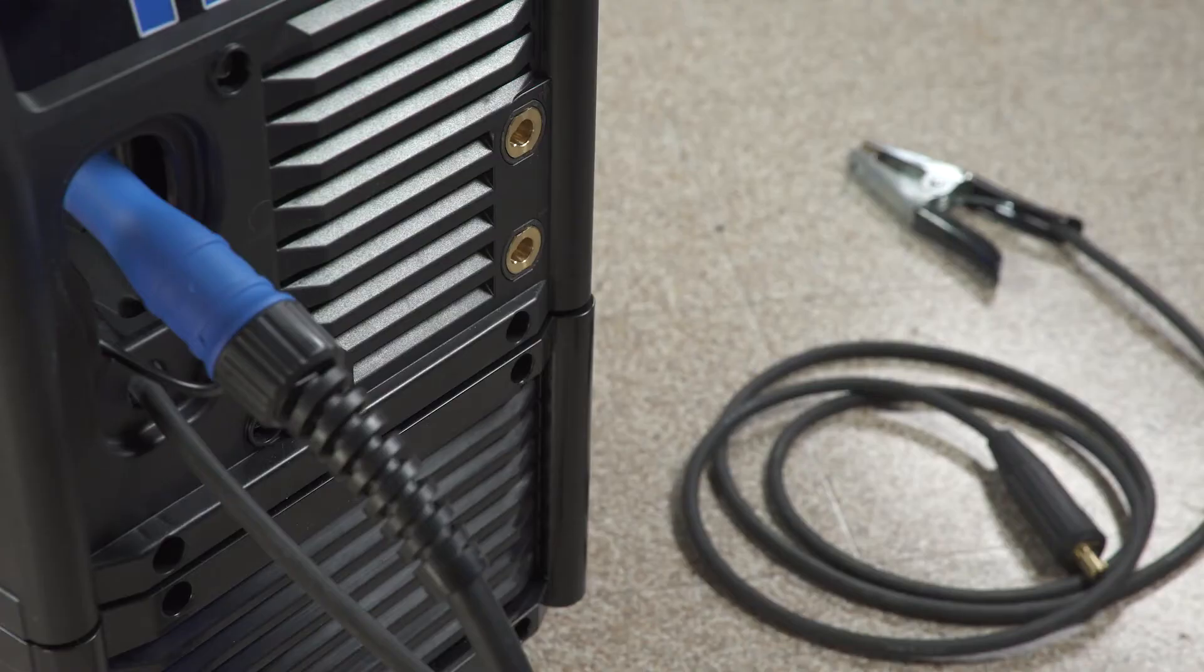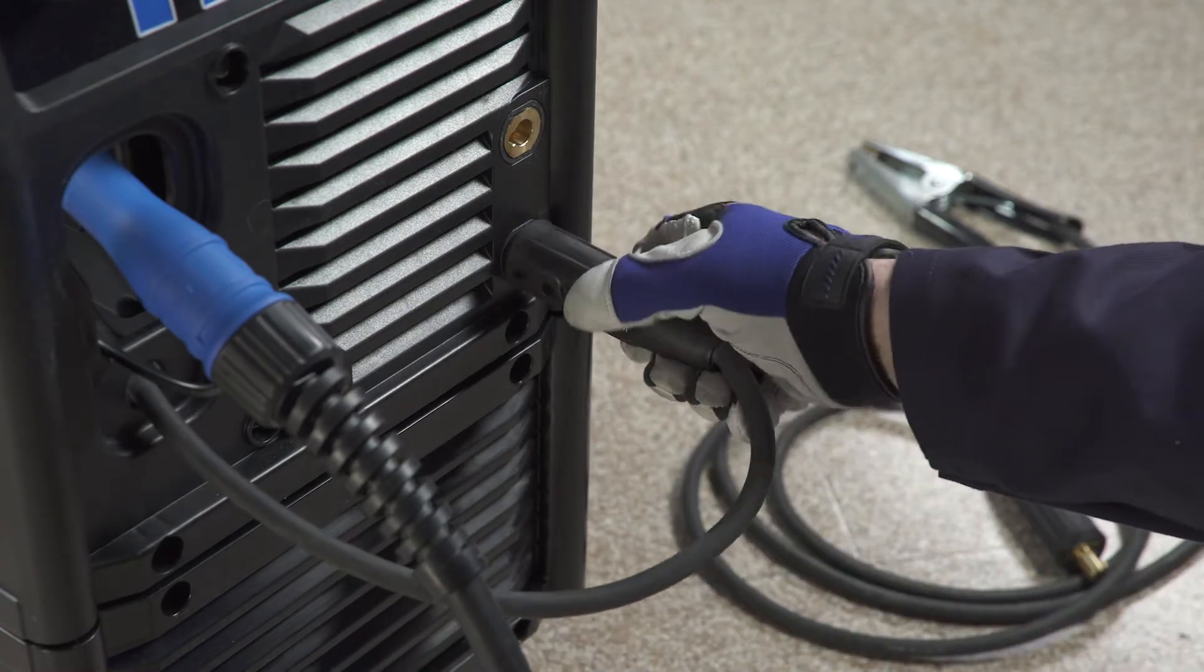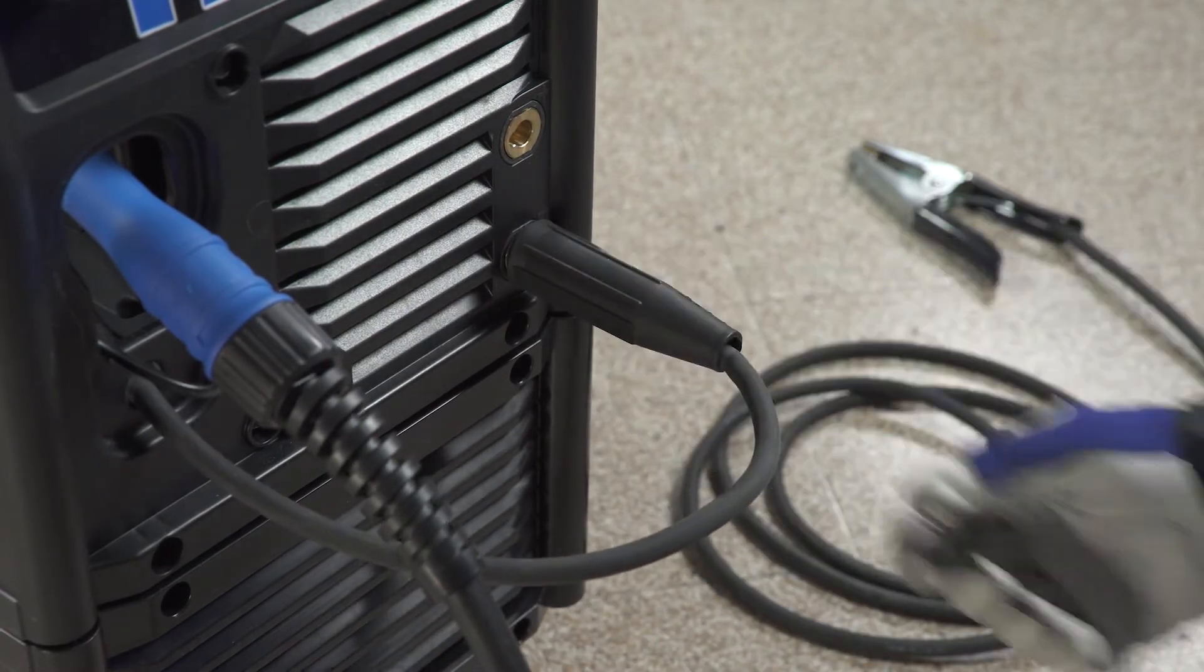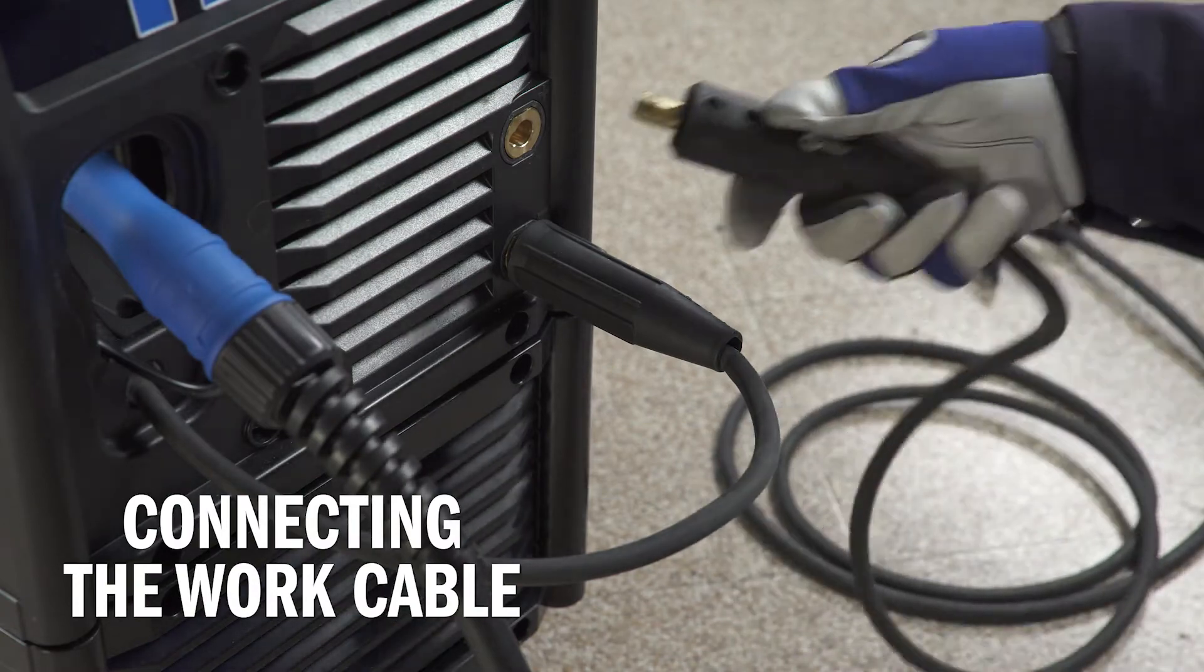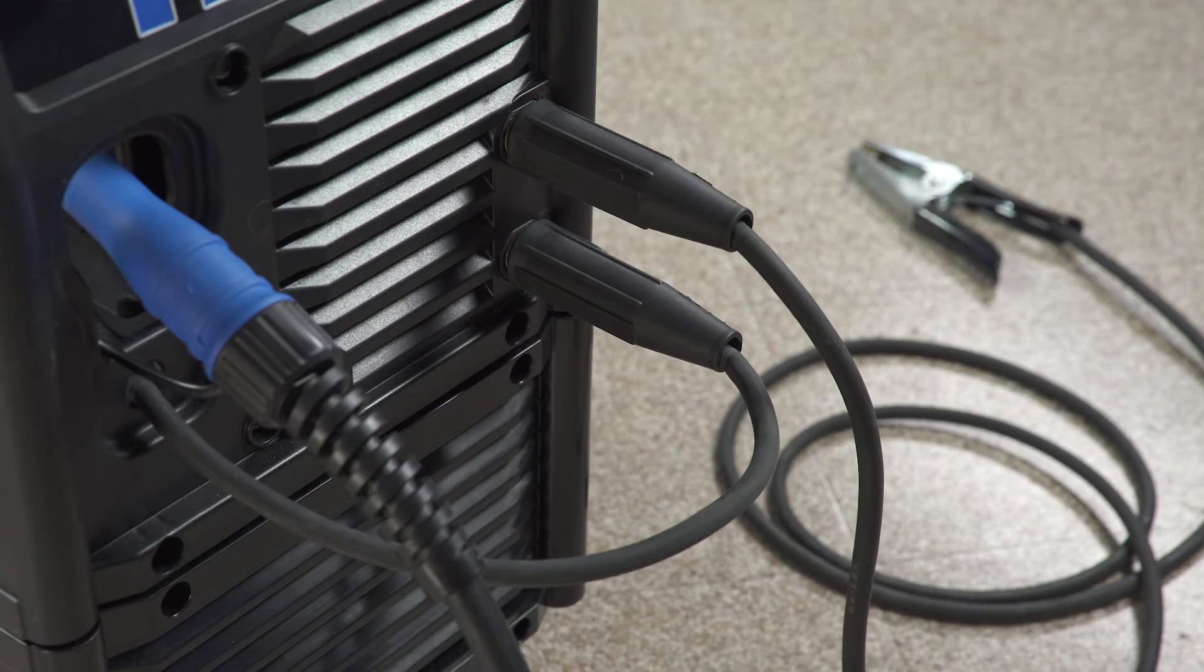While the machine is still off, connect the drive lead into the negative receptacle and turn clockwise to tighten. Next, connect the work cable to the positive receptacle and turn clockwise to tighten. Now the machine is set up to DCEN or electrode negative.